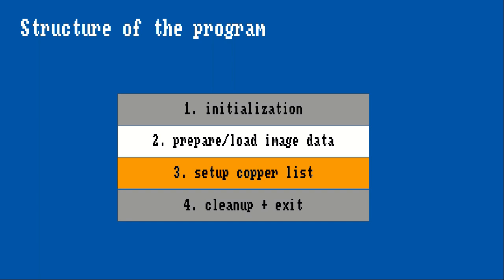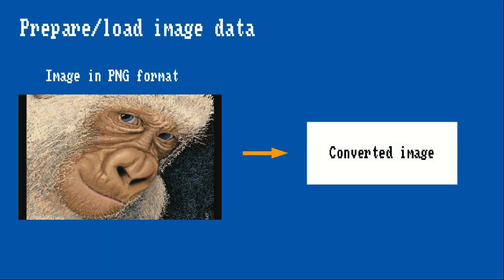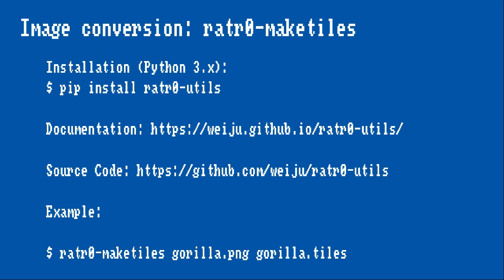Now that we've covered all the topics necessary to display image data using the Amiga hardware, let's design a program that does exactly that. Nowadays most images are stored in standard formats like PNG, but to display this data on Amiga hardware it needs to be prepared in a way the hardware can understand. We could add functionality to directly read PNG files, but it is more efficient to convert the data into a form that can be directly used by the custom hardware.